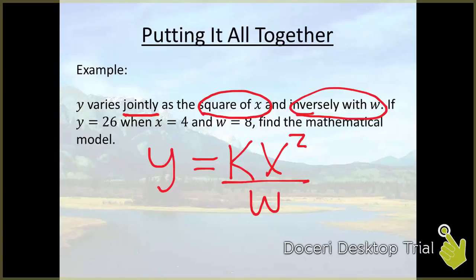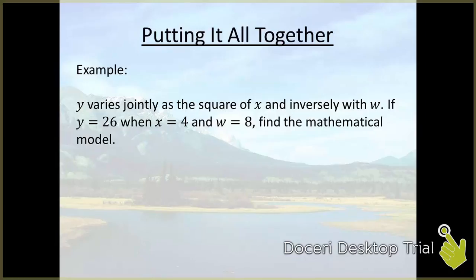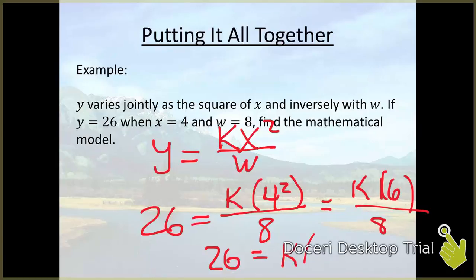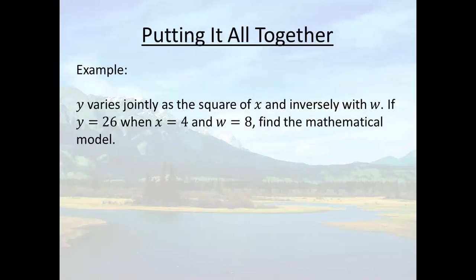Okay so what we want to do right now is plug in our values of y, x and w to figure out what is k and then we can rewrite the formula correctly. Okay so y equals kx squared over w means 26 is equal to k times 4 squared over 8. Well 4 squared is 16, and 16 over 8 is just 2, so that means our formula becomes 26 is equal to k times 2, and all that leads us to find out is that k equals 13.